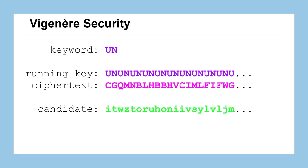Let's take a look at what would happen if you wanted to try and brute force the Vigenère Cipher. This might provide a little motivation as to why the Auto-Key and One-Time Pad are needed. We've got a ciphertext here with a specific keyword, just a two-letter keyword 'un'. We set up our running key, which is the name for repeating your keyword over and over again. It runs as long as the message to create a candidate — and we can look at that candidate and realize that's not a plain text message.